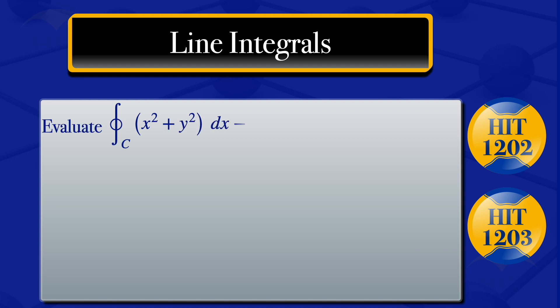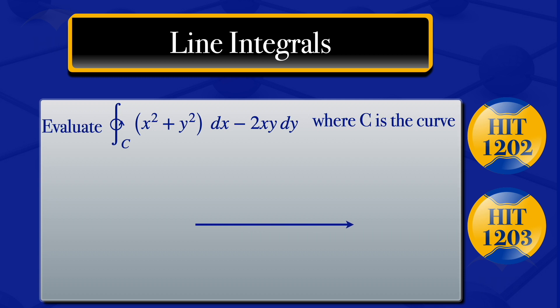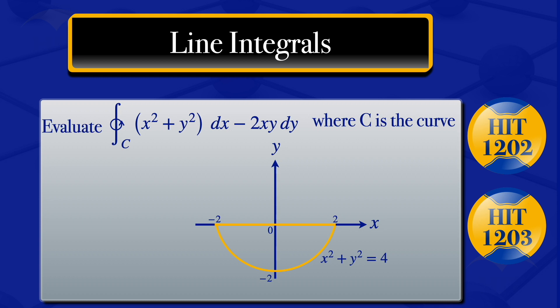In this tutorial, we are going to evaluate the integral of x squared plus y squared dx minus 2xy dy along the closed curve C, where C is the semicircle in the third and fourth quadrant. The semicircle has a radius of 2 and is centered at the origin, defined by x squared plus y squared equals 4.